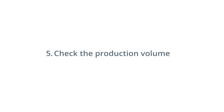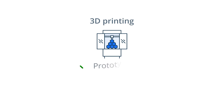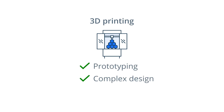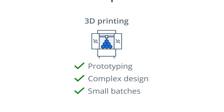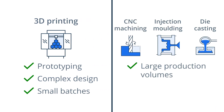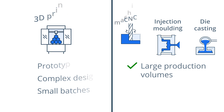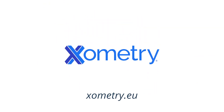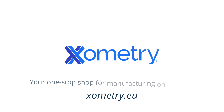5. Check the production volume. Remember that 3D printing is the best option for manufacturing single units with complex designs or for small batches. For large batches, consider using plastic CNC machining, injection moulding or metal die casting. Xometry — your one-stop shop for manufacturing on demand.